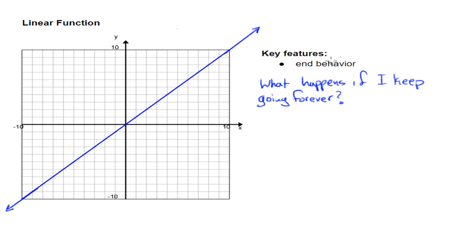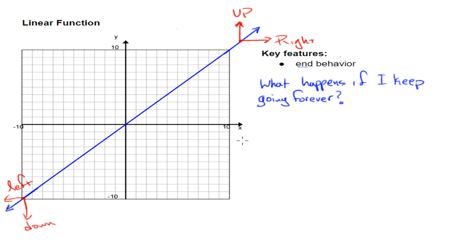End behavior answers this one particular question: what happens if I keep going forever? We have an arrow going up here. If I split this into two parts, I have an arrow going this way and this way — two components. If I keep going forever, I go forever up and forever to the right. Going down to the bottom, I can split that as well into a component going down and going to the left. So I go left forever and down forever. A linear graph goes forever in all directions.